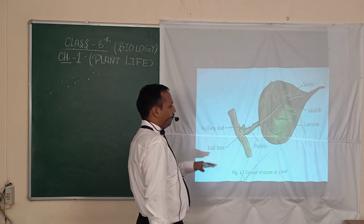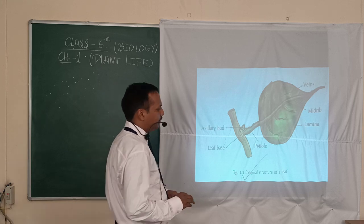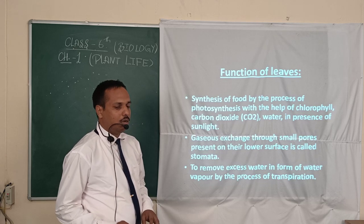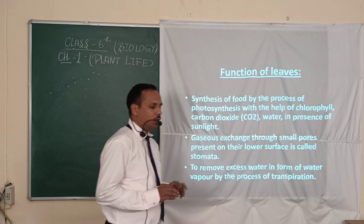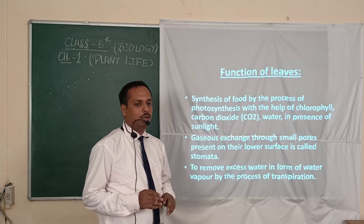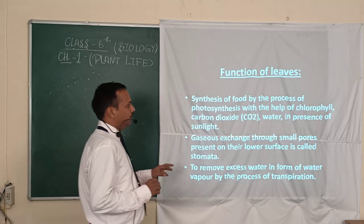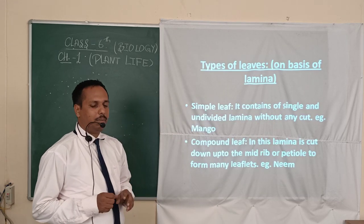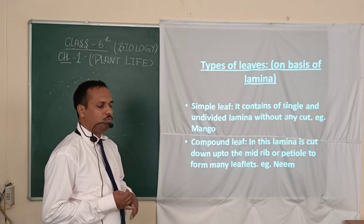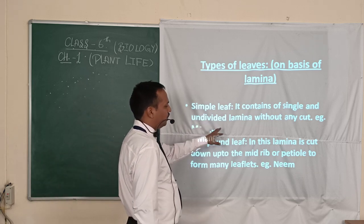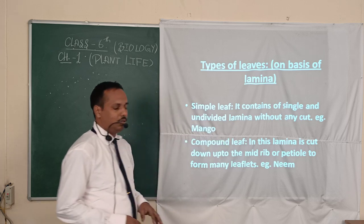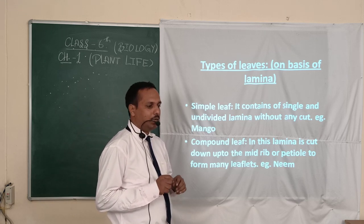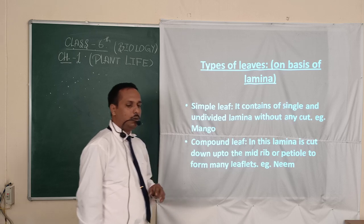On the basis of the lamina, the leaf is of two types. First is the simple leaf, where the lamina is not divided — like the mango leaf or guava leaf — those leaves have an undivided lamina. The second type is the compound leaf, in which the leaf blade is divided into several parts on the midrib.